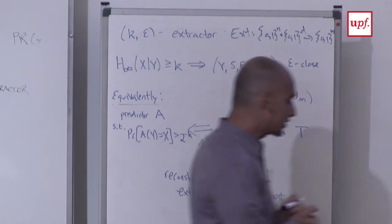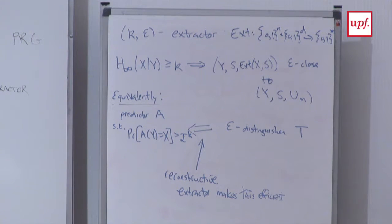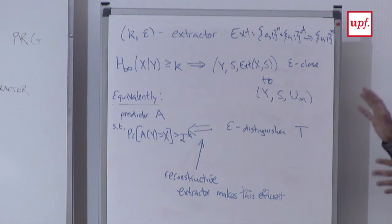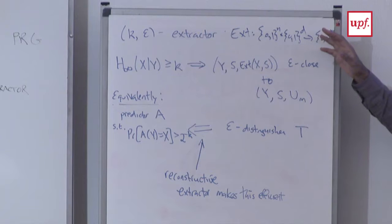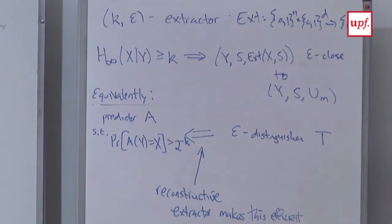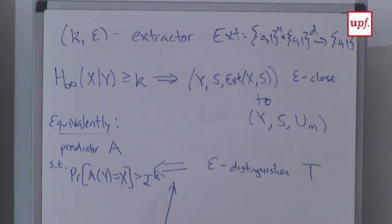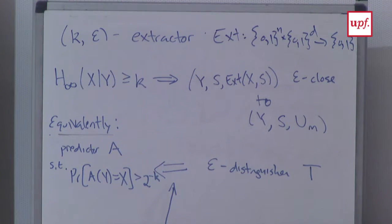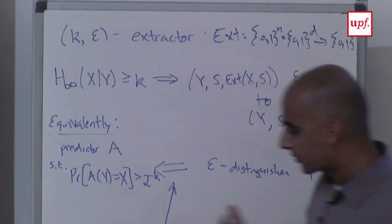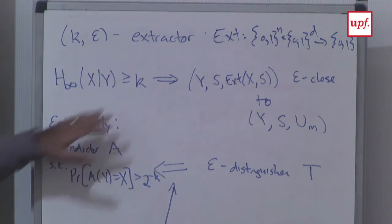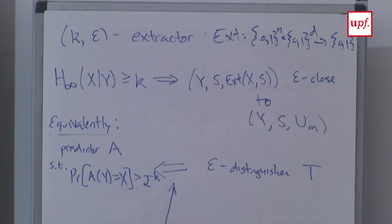What's the advantage of thinking about it in this language? One is that this more directly captures what we want to achieve in the application when we use Goldreich-Levin to convert unpredictability to pseudorandomness — not referring to predicting individual bits like Goldreich-Levin does, but saying we want to get a string that's indistinguishable from uniform. Secondly, this opens up more machinery of randomness extractors that can be brought to bear and give you potentially better parameters in conversion of unpredictability entropy to pseudorandomness.